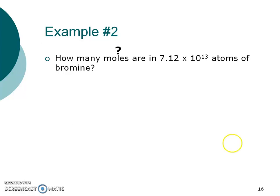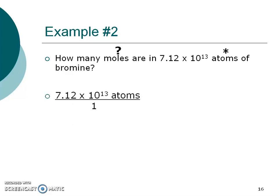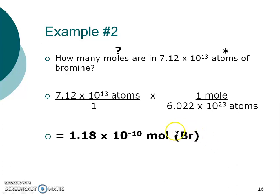Example 2: How many moles are in 7.12 times 10 to the 13th atoms of bromine? Atoms is what I'm starting with — there's my number and my unit. Not to confuse you with how bromine really exists as a diatomic molecule, but we're talking about atoms of bromine. My conversion setup is going to be one mole over Avogadro's number of atoms, because I want to cancel out those atoms. Pause, write this in your packet, use that EE button, do the information in order, and see if you get the correct answer. The atom of bromine's formula is Br.